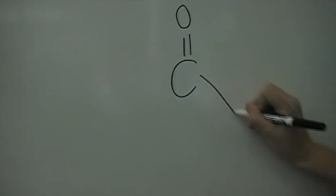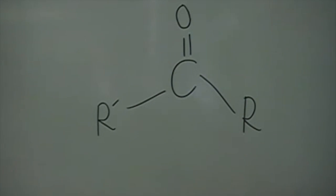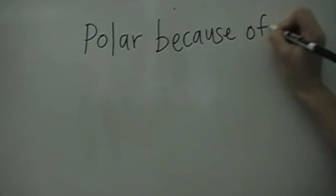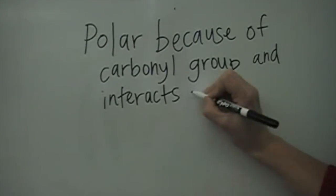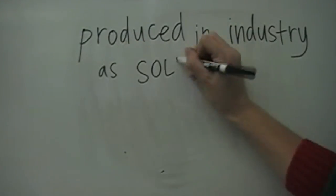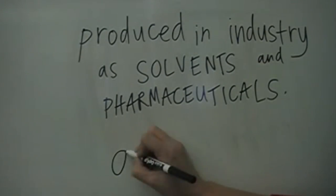A ketone is formed when a carbon is double bonded to an oxygen, forming a carbonyl group, and this carbonyl group is bonded to two other carbons. It is polar because of the carbonyl group and interacts with other compounds through hydrogen bonding. Ketones are produced in the industry as solvents and pharmaceuticals, and a major ketone is acetone.